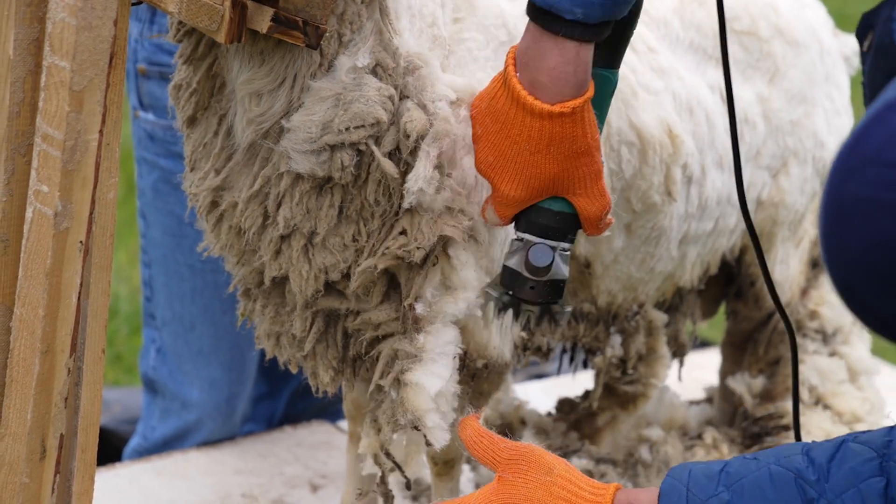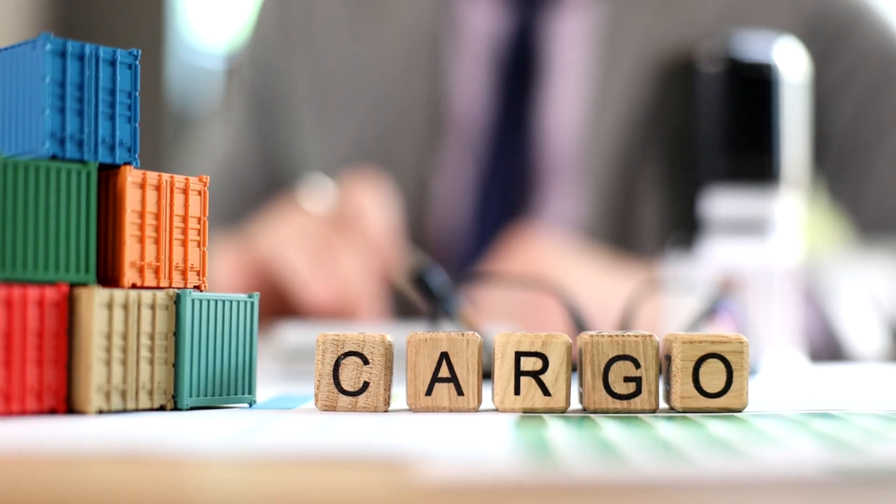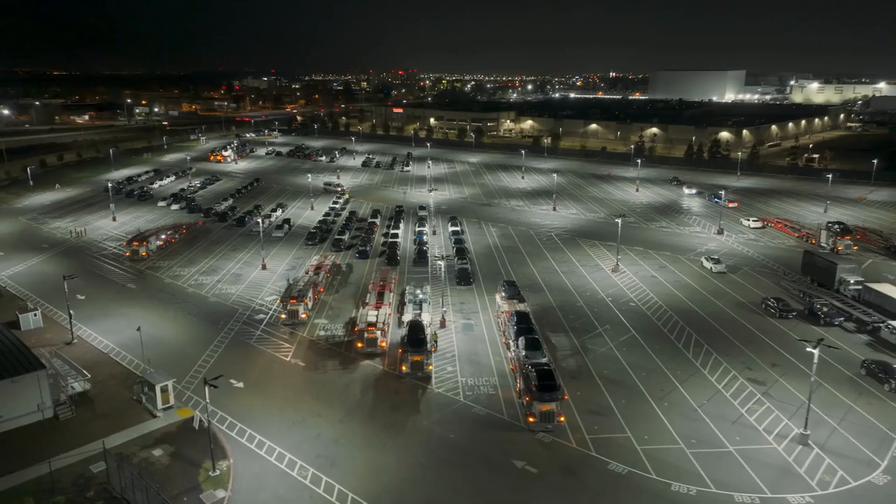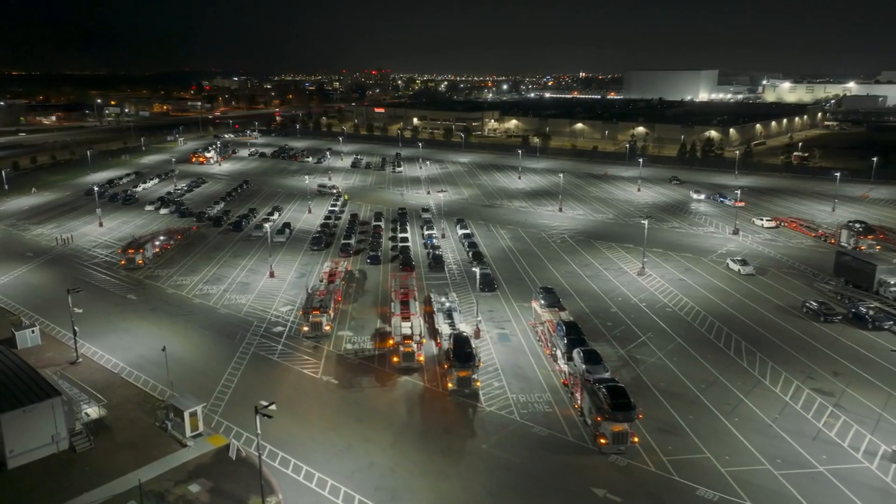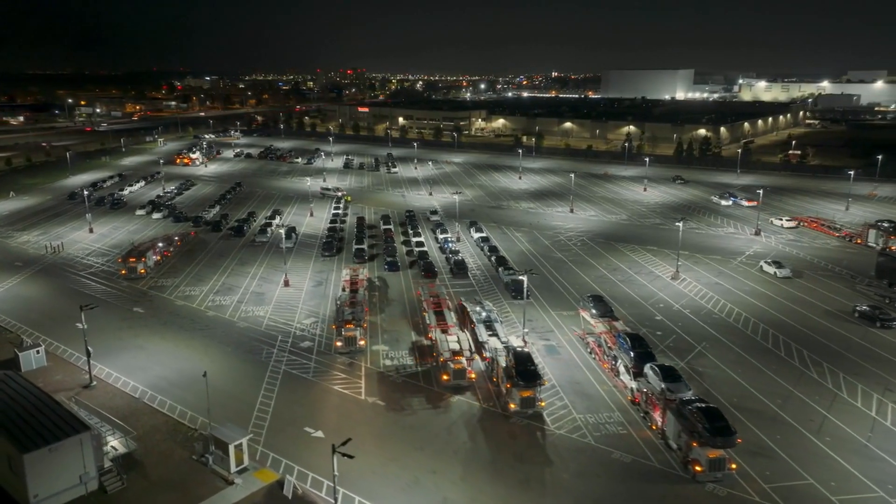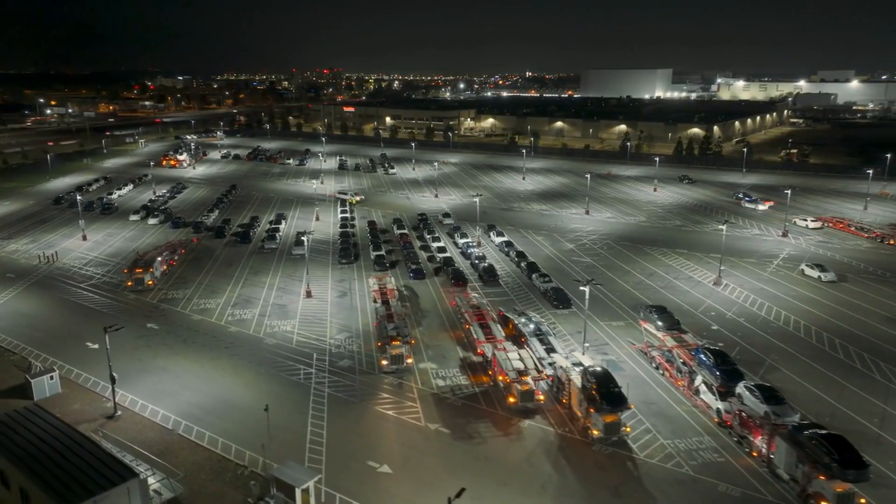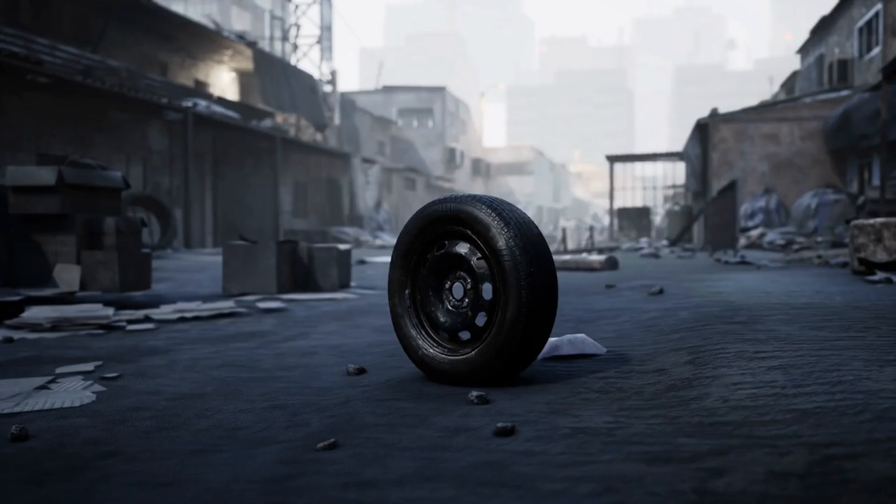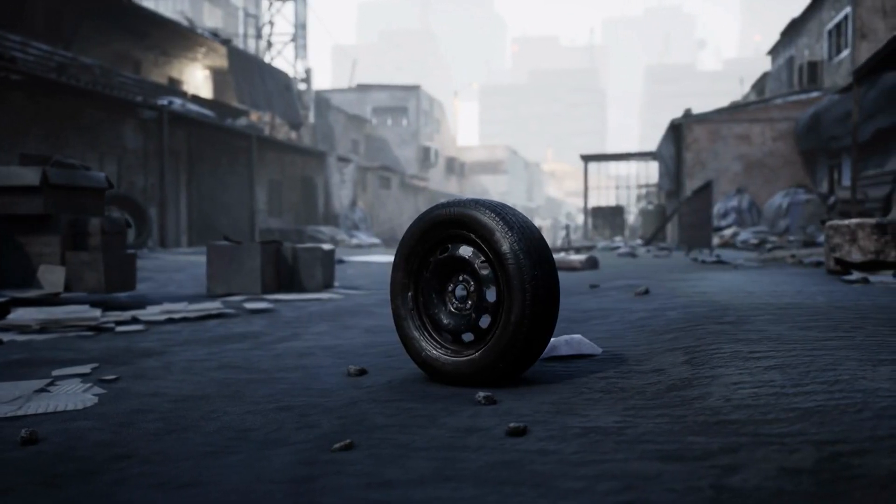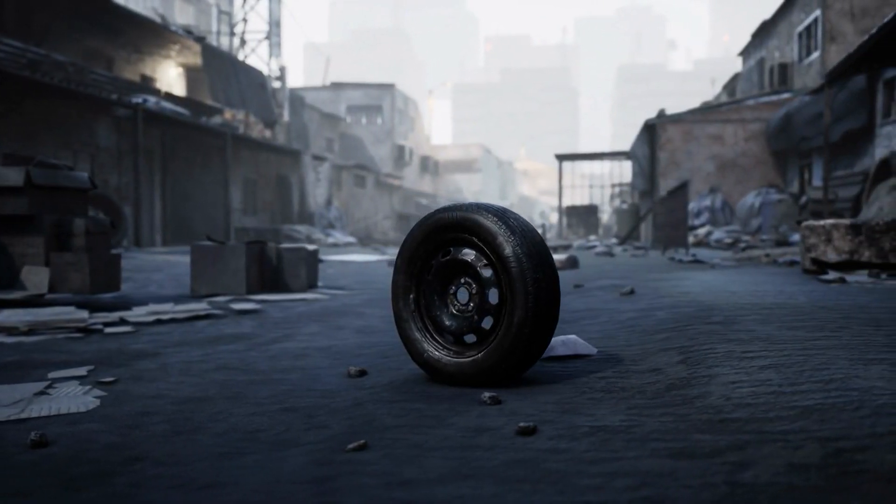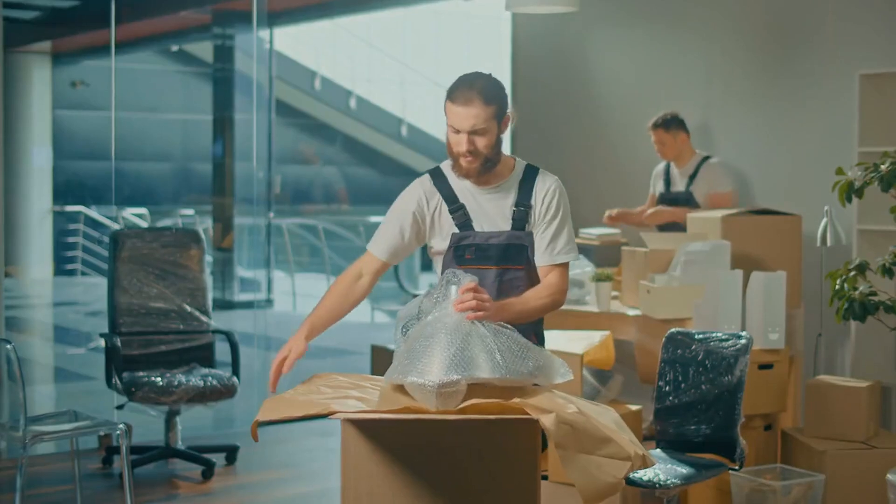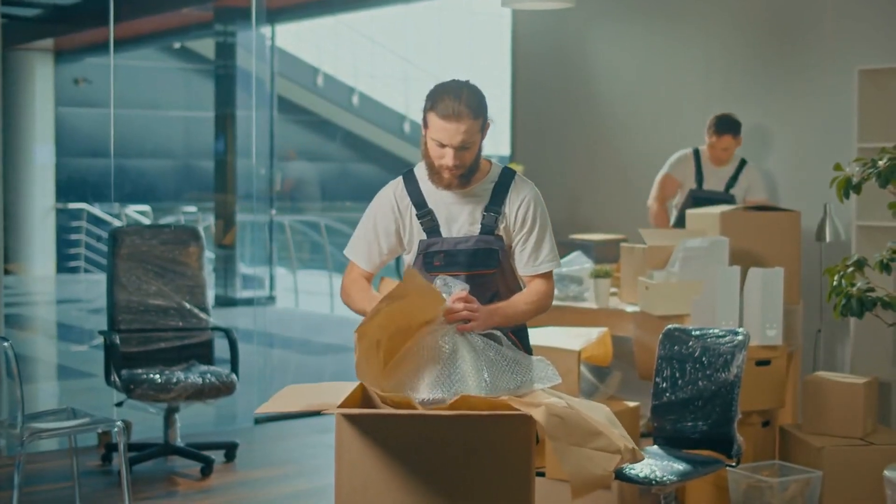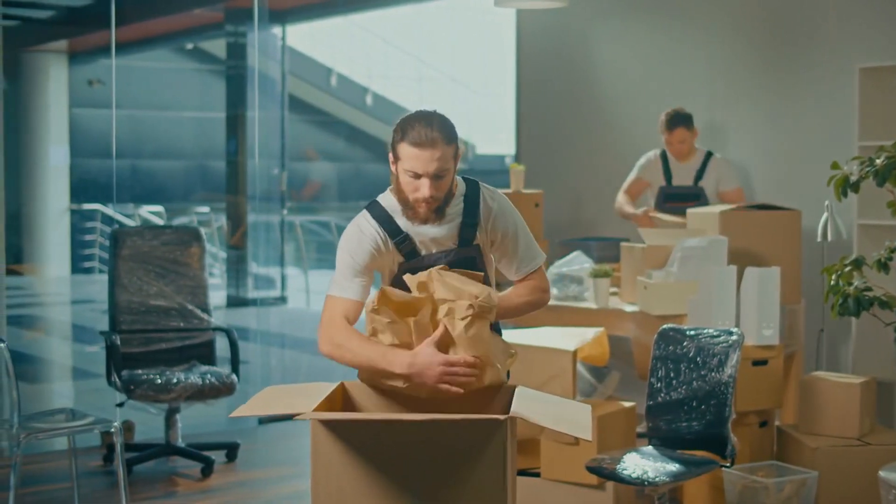Transportation would become more expensive and complex. Electric vehicles, heavily dependent on plastic components, would need to be completely redesigned. Public transportation systems would be disrupted as plastic components in buses and trains disappear. Bicycle tires and helmets would vanish, forcing changes in urban mobility. The shipping industry would need to completely rethink how goods are packaged and transported.